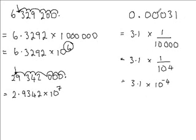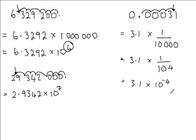Again, there is a connection between where the decimal point is in the original number and where we are placing it — the number of moves between the two and the power of 10. The decimal point is here; we are placing it between the 3 and the 1, which is a difference of 4 spaces. And our power of 10 is minus 4. When we are putting a small number into standard form, the power is always negative.